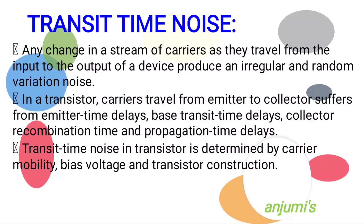Transit time noise: any change in a stream of carriers as they travel from input to output of a device produces an irregular and random variation noise. In a transistor, carriers travel from emitter to collector and suffer from emitter time delays, base transit time delays, collector recombination time, and propagation time delays. Transit time noise in a transistor is determined by carrier mobility, bias voltage, and transistor construction.